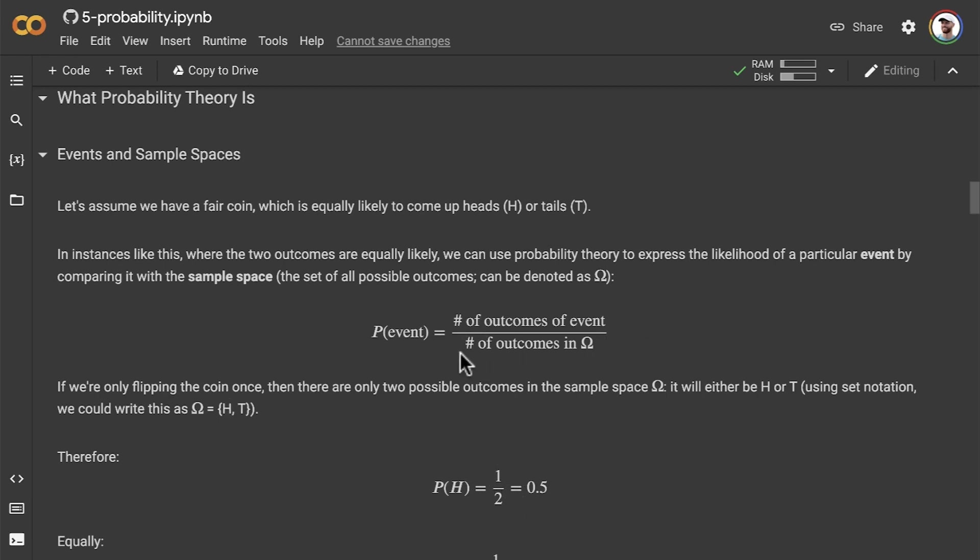So going back to our equation, the probability of heads H is equal to the number of outcomes that represent that event. So just H in this case, there's only one event, H. And all of the outcomes in our set consist of two events, H and T. So we have a denominator of two. One outcome out of two all the possible outcomes, and so one divided by two is 0.5. So there's a probability of 0.5 of getting heads on any given toss of a fair coin, a 50% chance of heads.